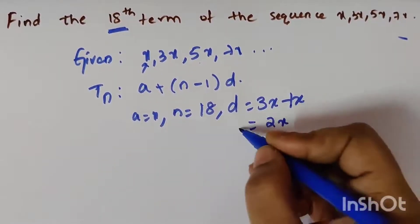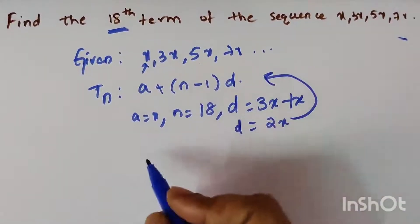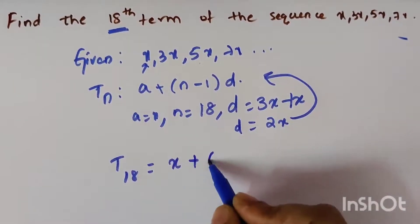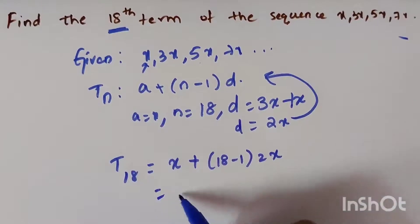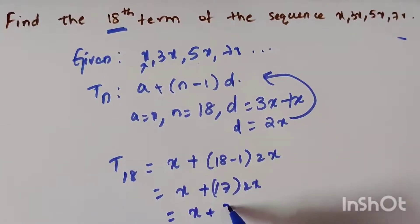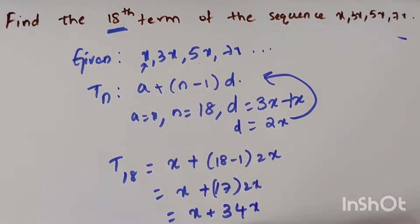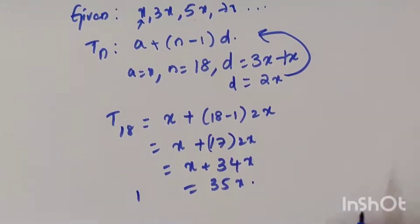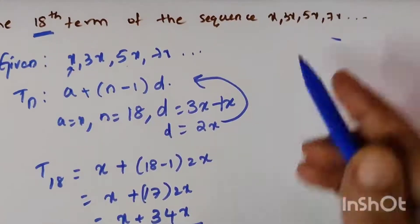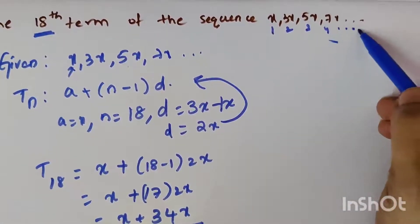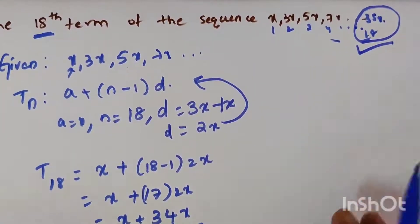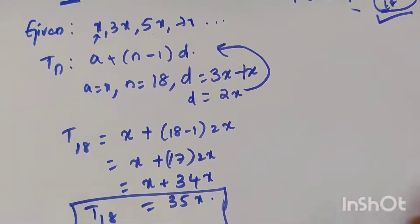Substituting into the formula: T(18) = a + (n−1) × d = x + (18−1) × 2x = x + 17 × 2x = x + 34x = 35x. So T(18) = 35x. That is the 18th term of this sequence.